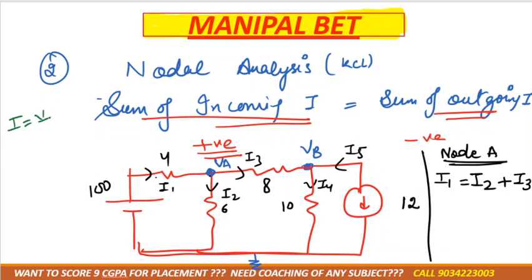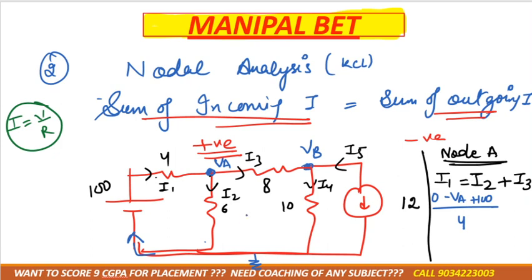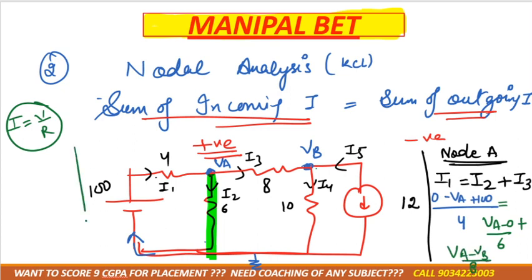Next, convert currents in terms of V/R using Ohm's law: I = V/R. So I1 equals (0 minus VA plus 100) divided by 4 ohms. I2 is moving from VA to 0, so it is (VA minus 0) divided by 6. I3 is moving from VA to VB, so it is (VA minus VB) divided by 8.